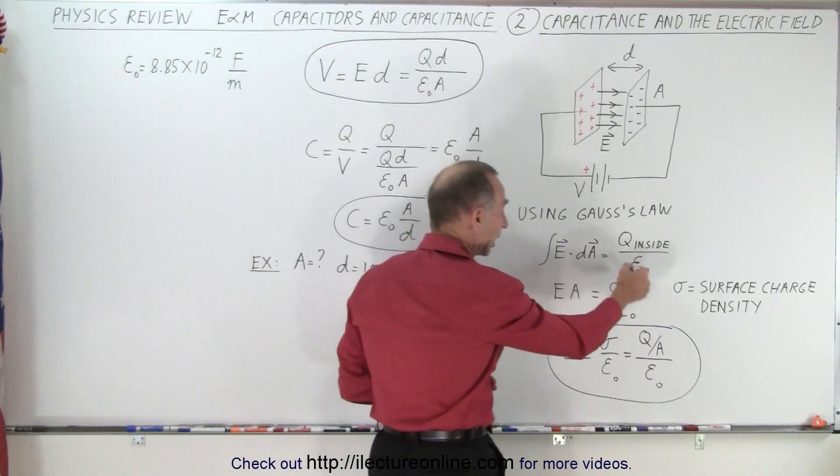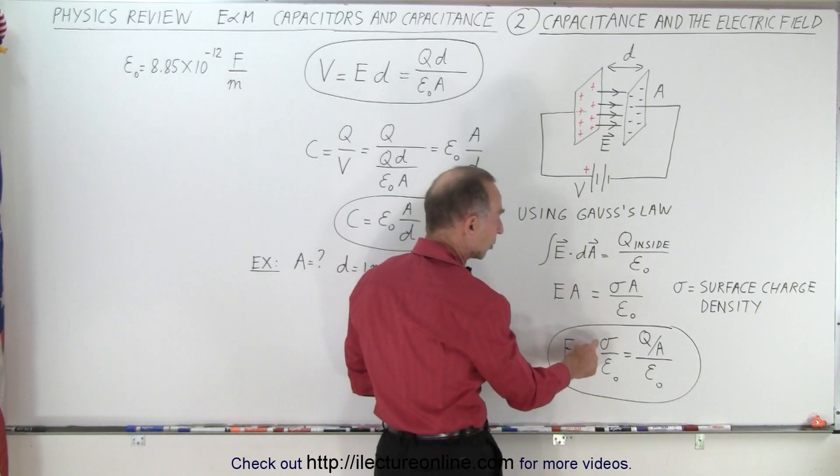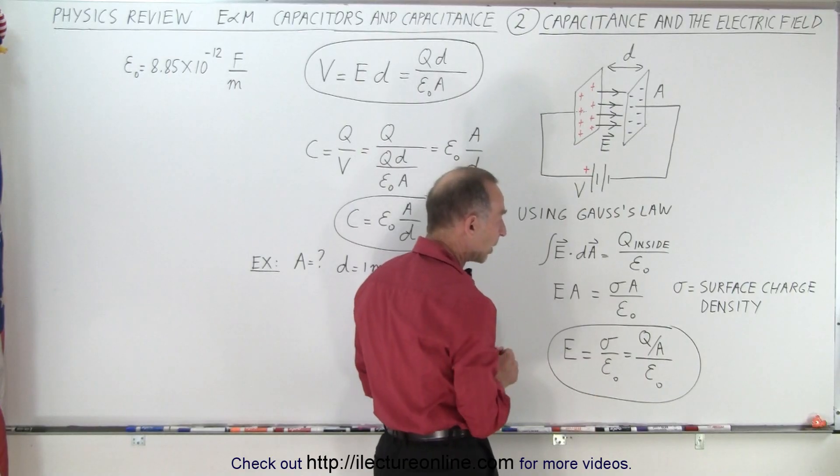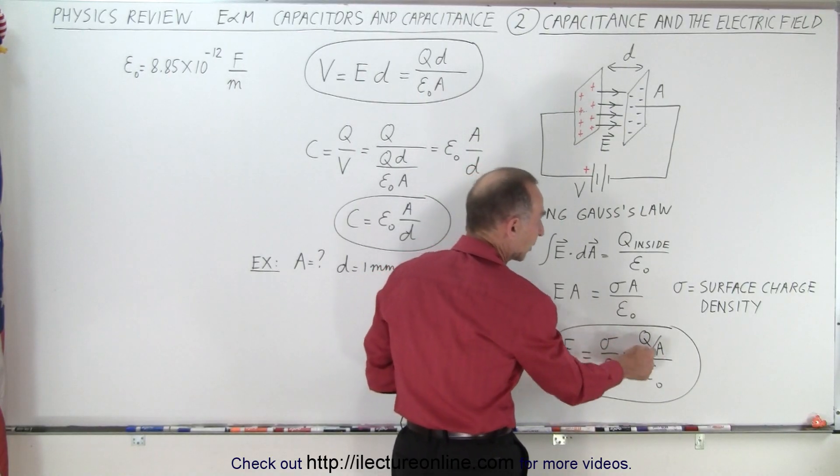And then realizing there's an area on both sides that cancels out, so the electric field between the plates is simply the charge density divided by epsilon nought, or instead of writing the charge density, we can write that as charge divided by the area.